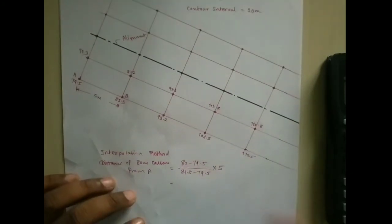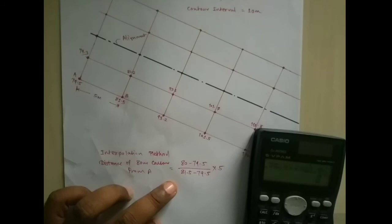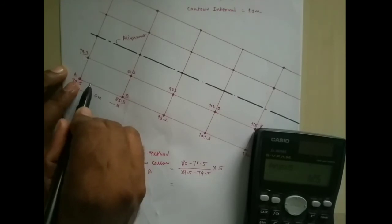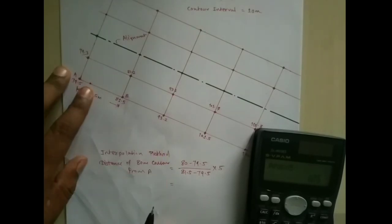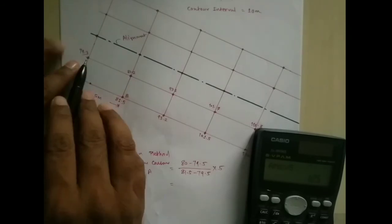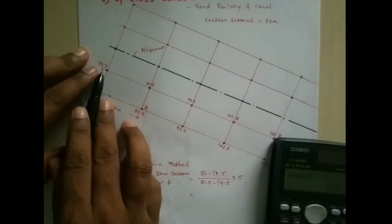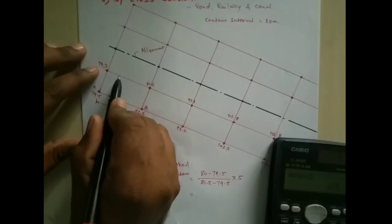So the formula gives us: (80 minus 79.5) divided by (81.5 minus 79.5), which equals 0.25, multiplied into the distance A to B of 5 meters, giving 1.25 meters. If A to B is 5 meters, the 80m contour point is 1.25 meters from A. For another point, for example: (80 minus 79.3) divided by (81.2 minus 79.3) into 5 gives a similar particular point.